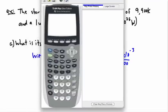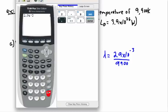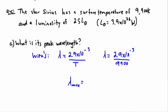Let me calculate this: 2.9 × 10⁻³. That's still the same number in scientific notation — 2.9 × 10⁻³. I divide it by 9,900 and I get a value of 2.9 × 10⁻⁷. I'm only using two significant digits here, so that's 2.9 × 10⁻⁷ meters.